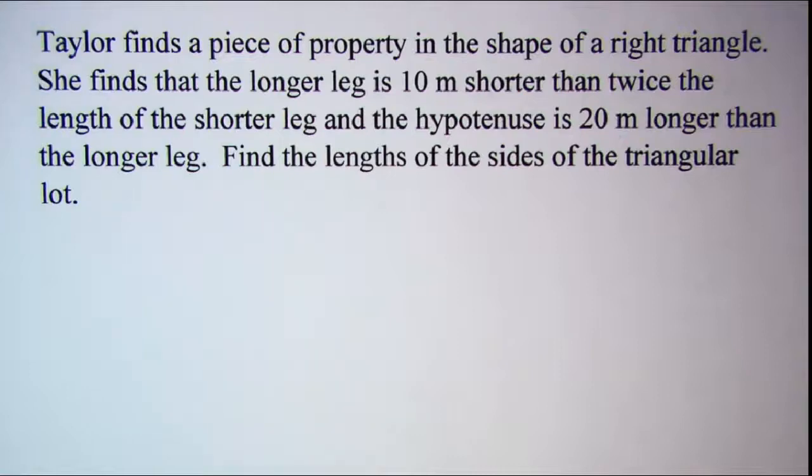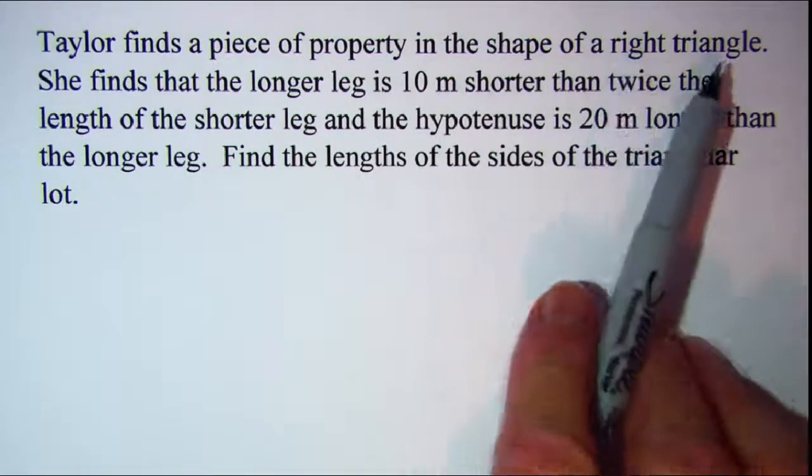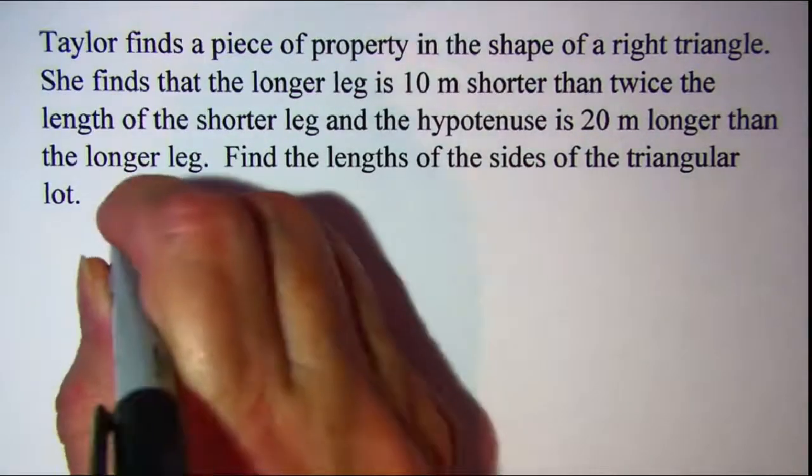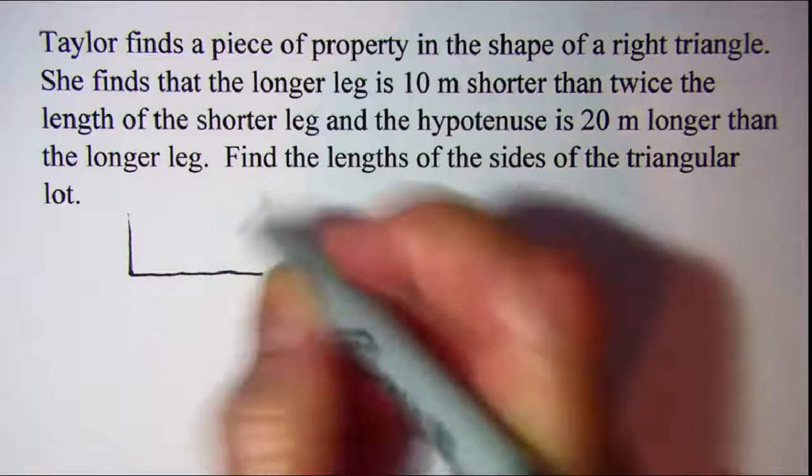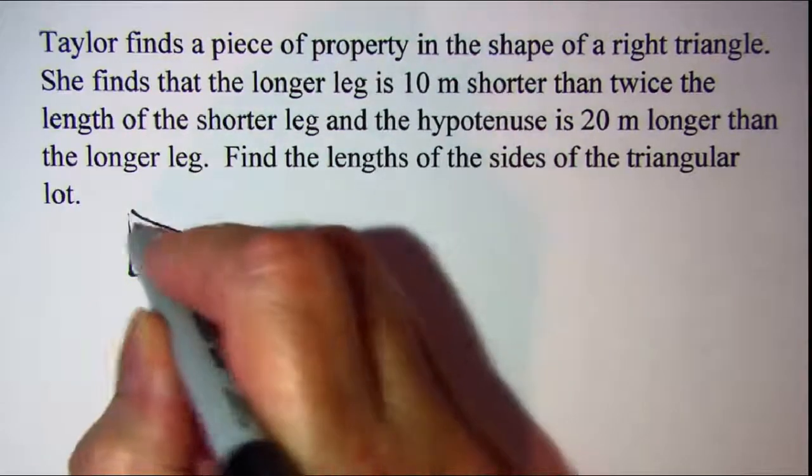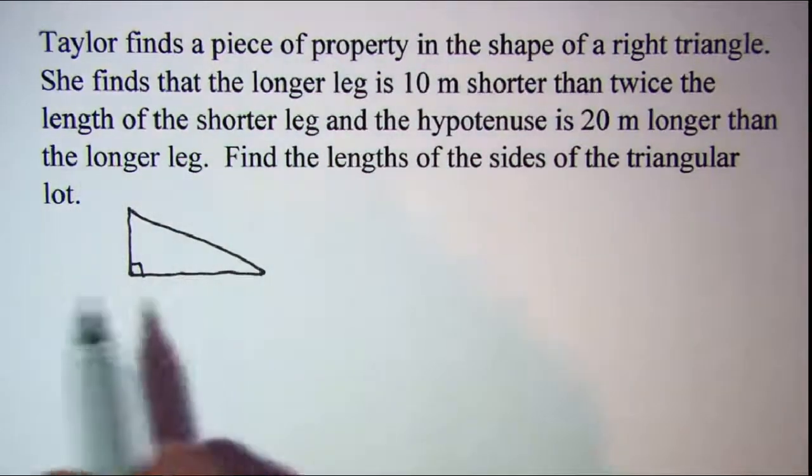So my first thing that I would do is to draw a right triangle with obviously a shorter leg and a longer leg. And I'll assign my variables on this diagram.